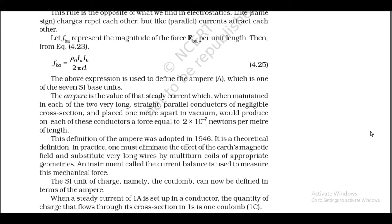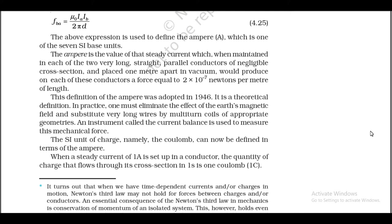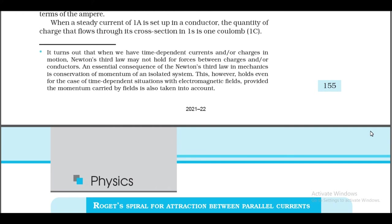In practice one must eliminate the effect of Earth's magnetic field and substitute very long wires by multi-turn coils of appropriate geometries. An instrument called the current balance is used to measure this mechanical force. The SI unit of charge — the coulomb — can now be defined in terms of the ampere: when a steady current of 1 A is set up in a conductor, the quantity of charge that flows through its cross-section in one second is one coulomb (1 C). When we have time-dependent currents, Newton's third law may not hold for forces between charges or conductors; however, conservation of momentum holds when the momentum carried by the electromagnetic field is taken into account.